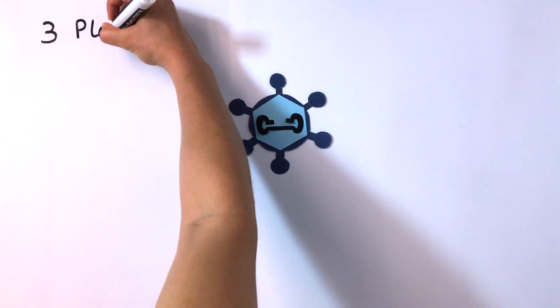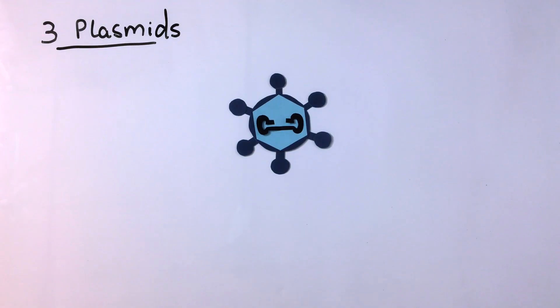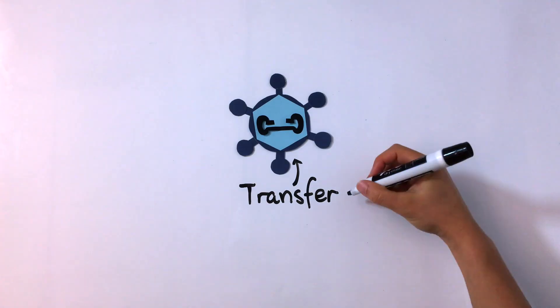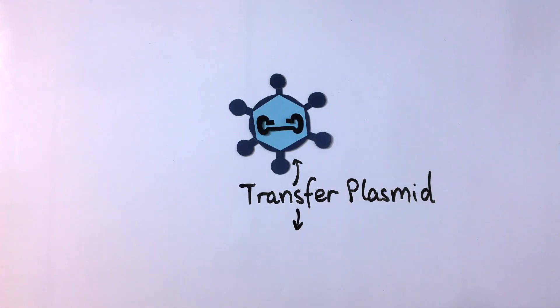In order to produce the AAV vector, three plasmids are required: the packaging plasmid, the transfer plasmid, and the helper plasmid. This video covers a transfer plasmid which encodes the AAV vector genome.